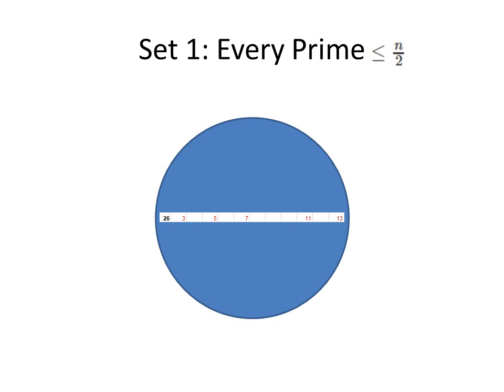Let's think about sets as they relate to partitions in an elementary way. Set 1. There is a set that contains every prime except 2, less than or equal to n divided by 2.